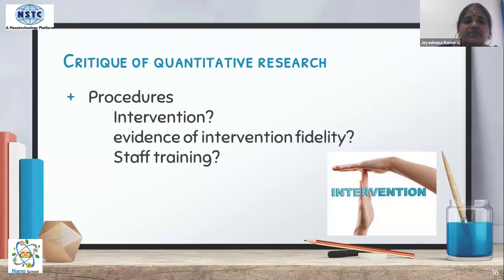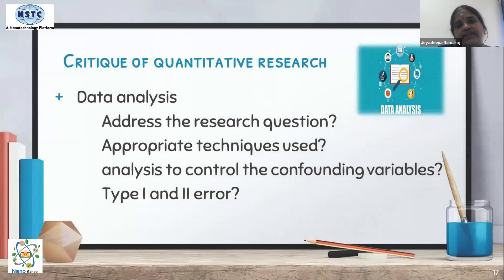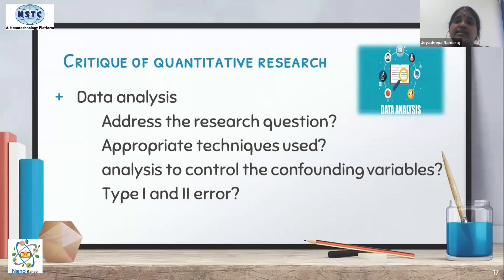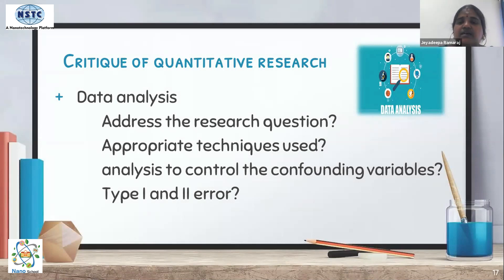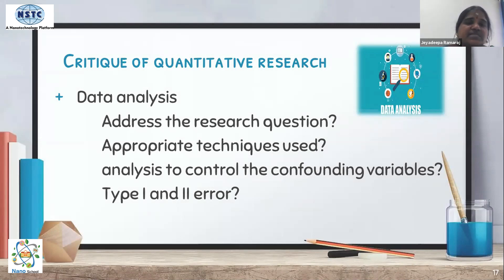Then go to data analysis. Check whether the analysis addresses all research questions, whether appropriate statistical techniques were used, whether analysis to control confounding variables was carried out, and whether measures were taken to avoid Type I and Type II errors. Look into all these aspects in the data analysis section.